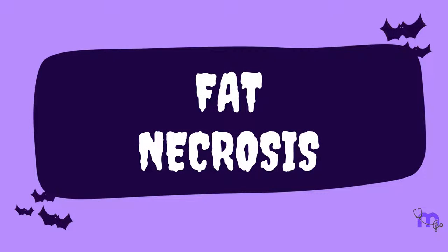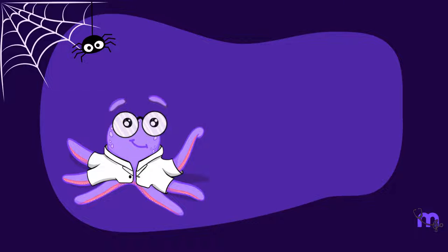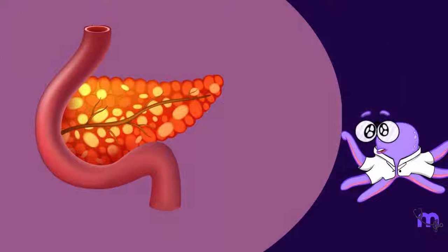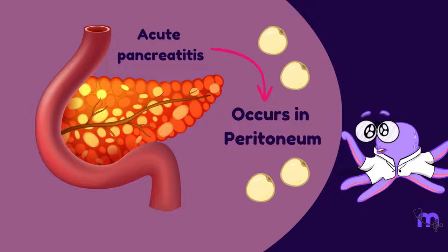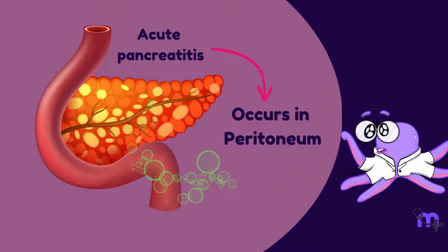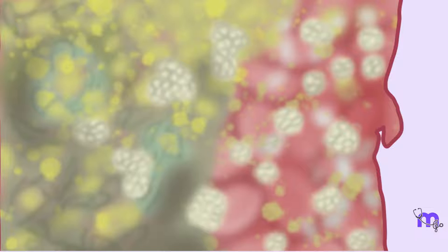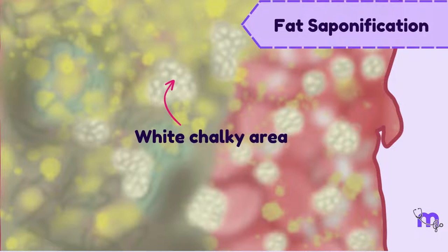Fat necrosis, as the name suggests, is the death of fat cells in tissues with high fat content. This is not a method for weight loss, but has perilous consequences. It occurs in the peritoneum following acute pancreatitis. The enzymes leak from the pancreas and break down the peritoneal fat. The resultant fatty acids combine with calcium derived from dead cells to form chalky white areas grossly — this is known as fat saponification. Acute pancreatitis can be life-threatening.